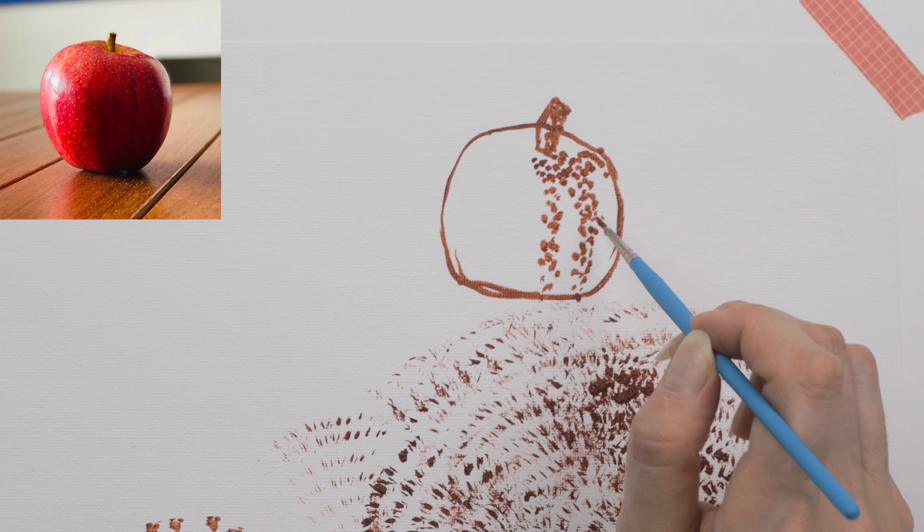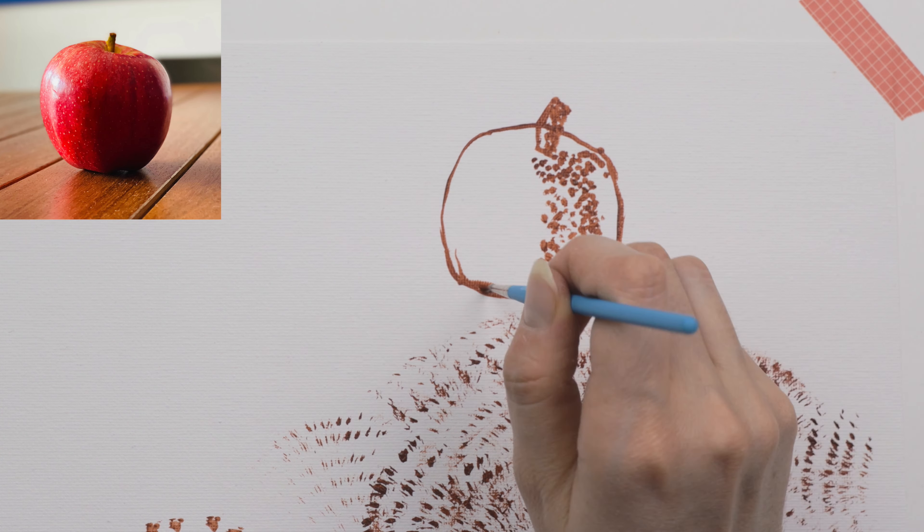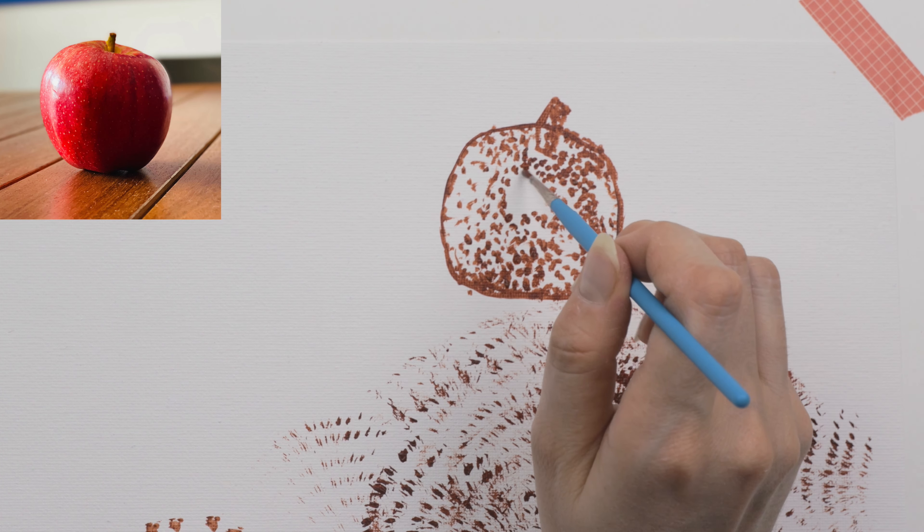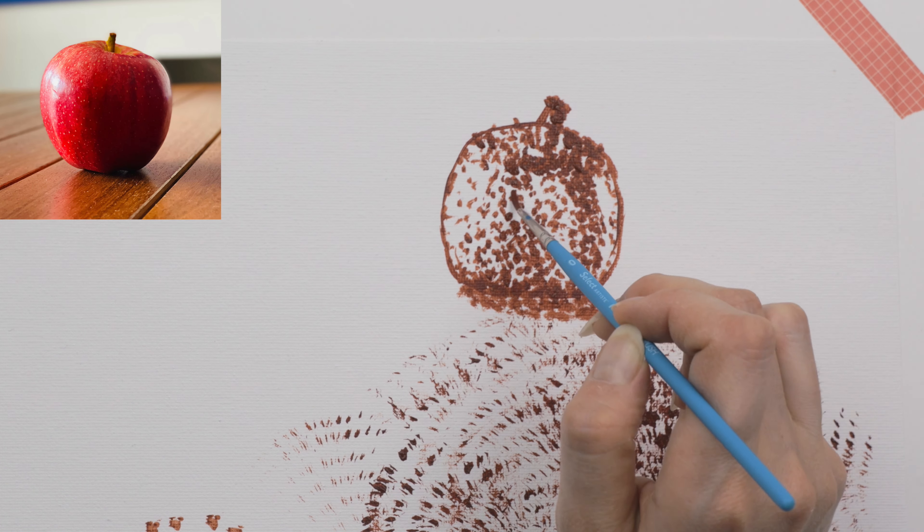And I'm just sketching out a quick ugly little apple here. It looks like a pumpkin, but it's actually an apple. Just kind of showing how you can place the dots closer together or farther apart for different shades.